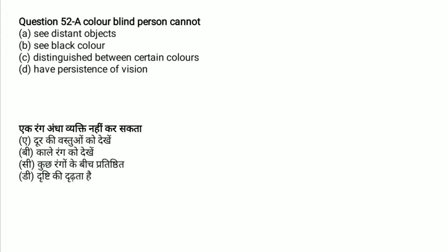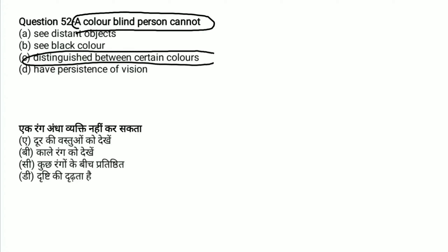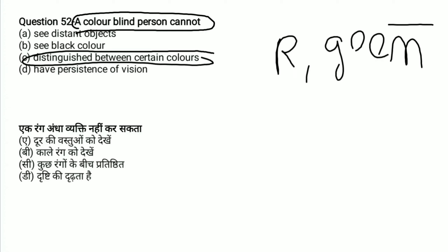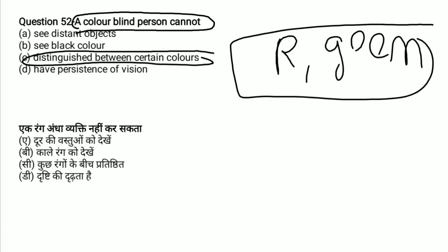A color blind person cannot distinguish between which two colors? The answer is red and green — a color blind person cannot distinguish between red and green.